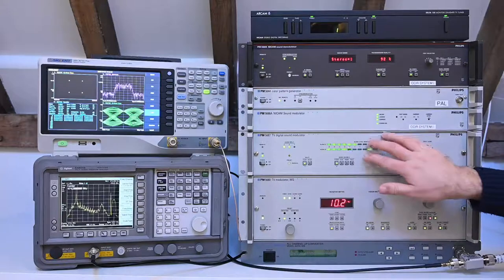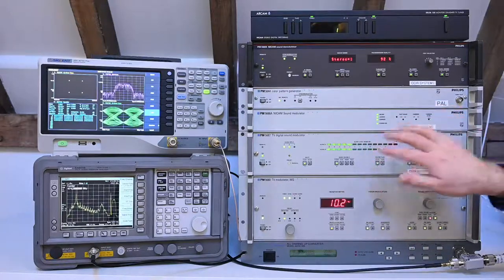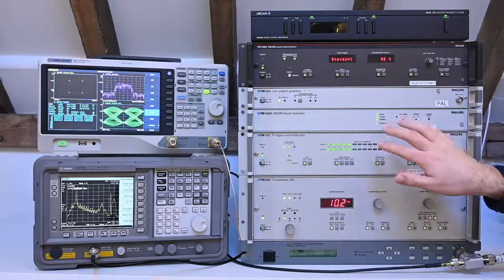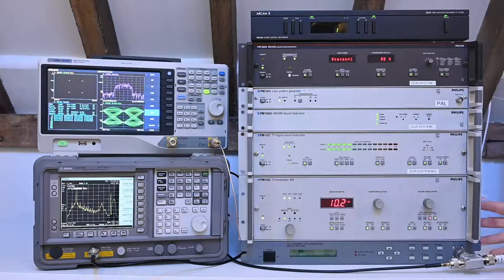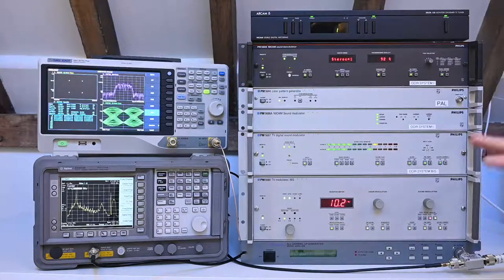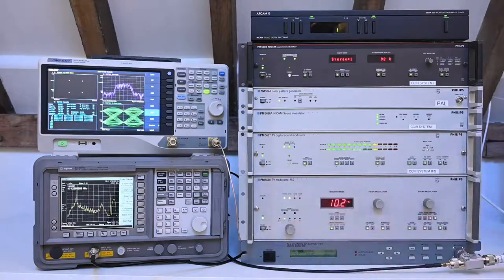Moving down here, we've got our 5687, and this is the actual NICAM modulator. This has stereo left and right inputs, RF carrier output, which is combined with the output from this vision modulator. Those are both fed into this up converter and transmitted with the rest of this signal.